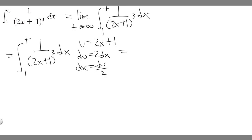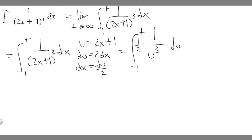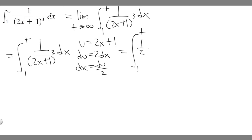Let's rewrite it and replace it with u. So this becomes 1 over u cubed, and replace dx with du over 2. We can move the 1/2 out front. So this is 1 half times u to the minus 3 du, since 1 over u cubed is the same thing as u to the minus 3.